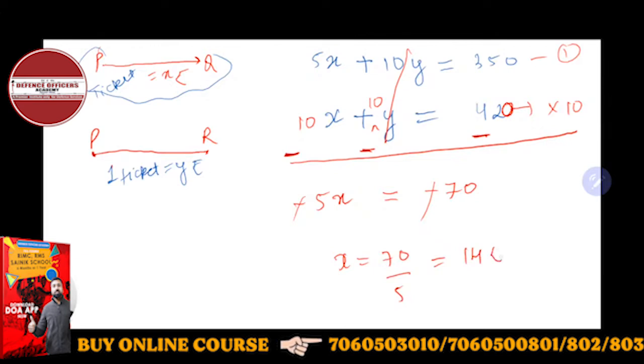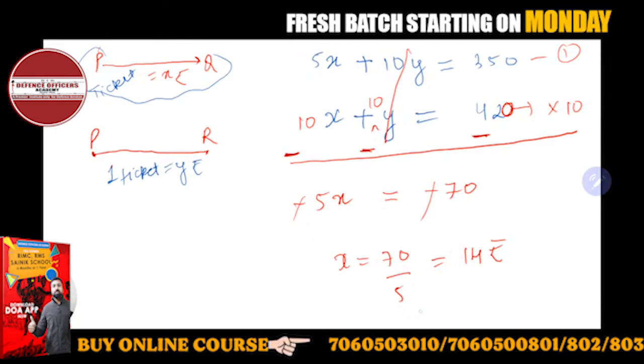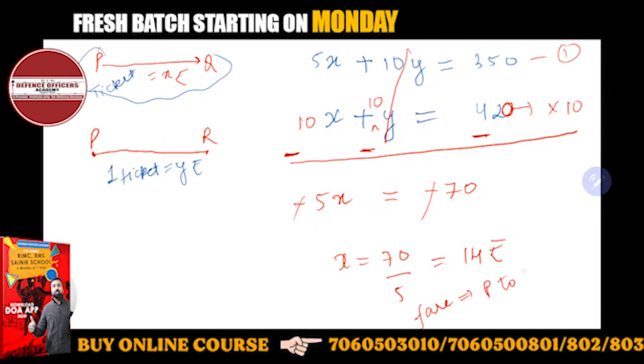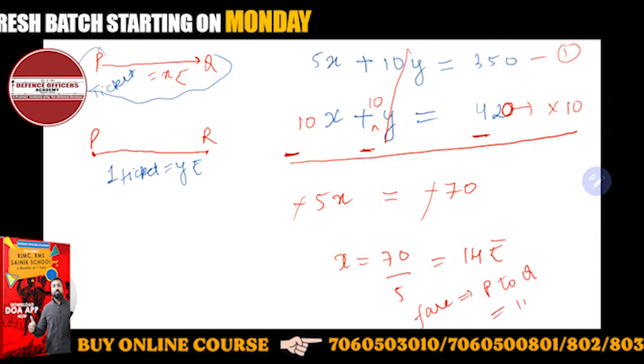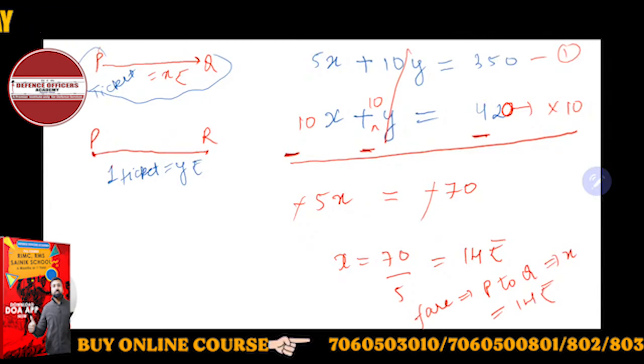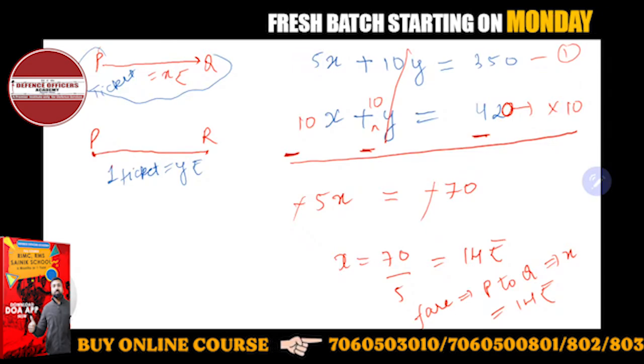So minus and minus sign will get cancelled. X will come to 70 upon 5 and it will come to 14 rupees. So the fare from P to Q is nothing but 14 rupees. We can calculate Y also now by putting this value of X in any equation. Clear?